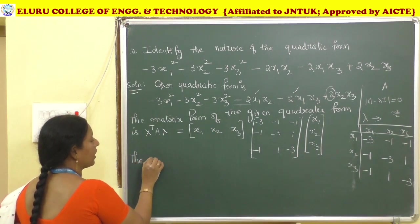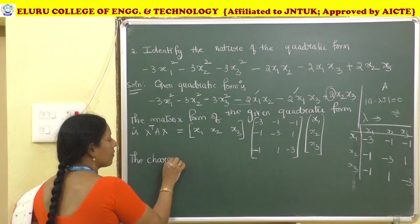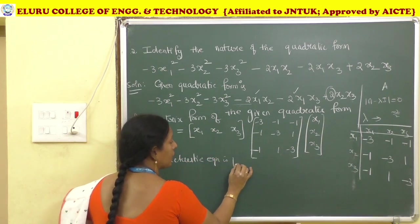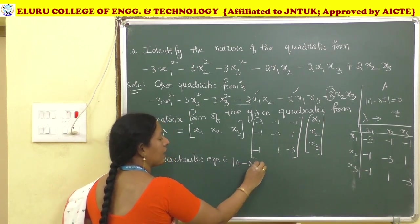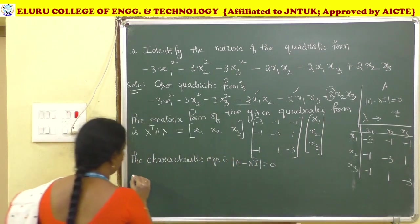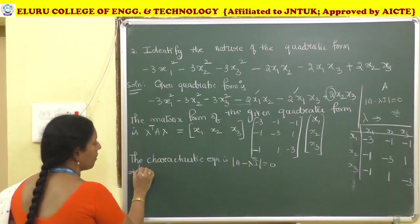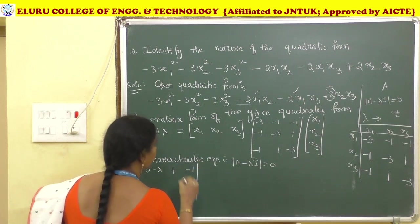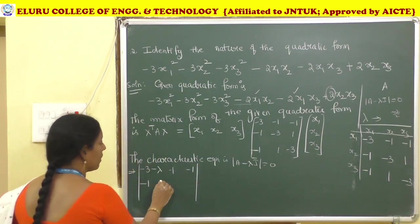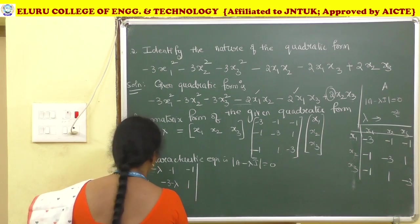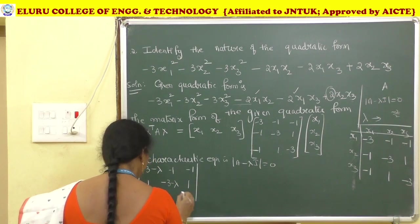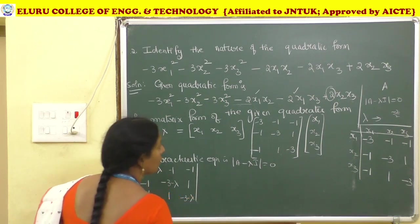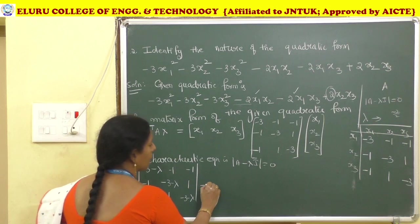The characteristic equation is det(A − λI) = 0. This gives the determinant: |−3−λ, −1, −1; −1, −3−λ, 1; −1, 1, −3−λ| = 0. After simplification using the formula λ³ − (trace A)λ² + (trace of adjoint A)λ − det A = 0.